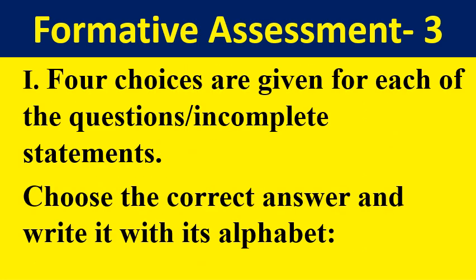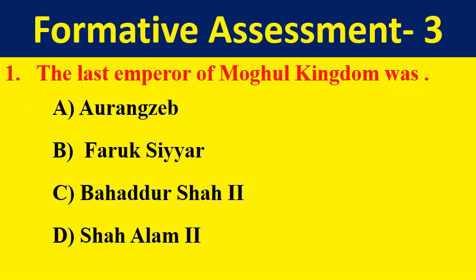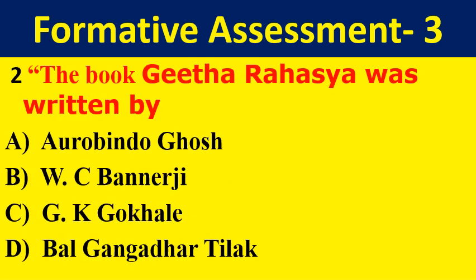4 choices are given for each of the questions and incomplete statements. Choose the correct answer and write it with the alphabet. 1st question: The last emperor of Mughal kingdom was — Aurangzeb, Farukh Siyar, Bahadur Shah 2nd, or Shah Alam 2nd. Write the answer along with its alphabet.